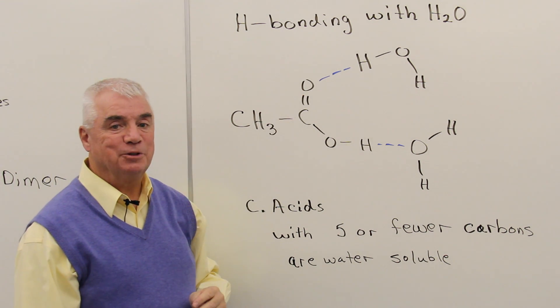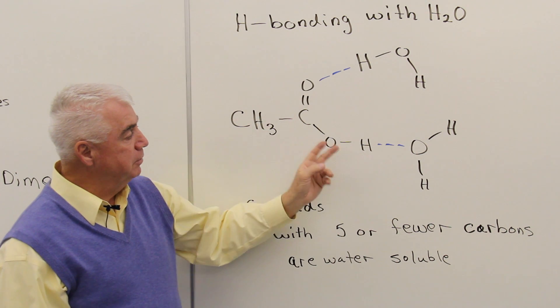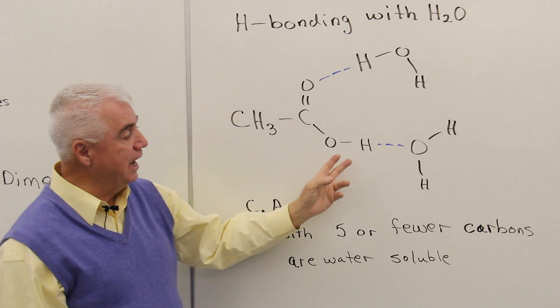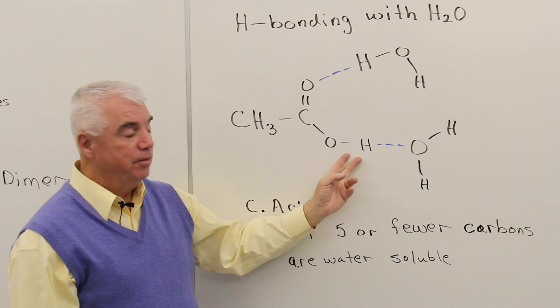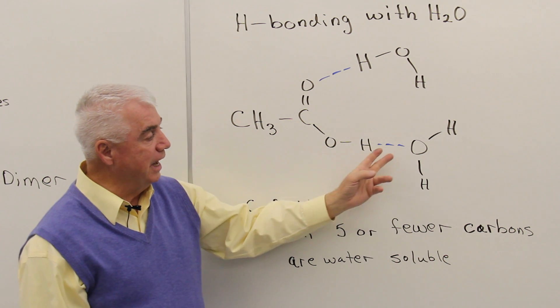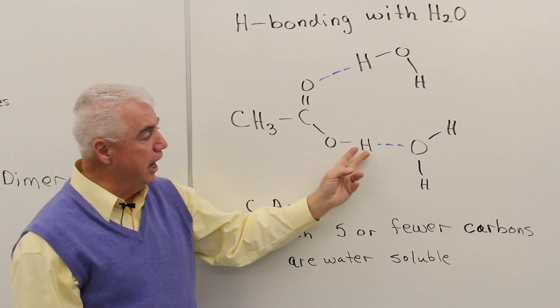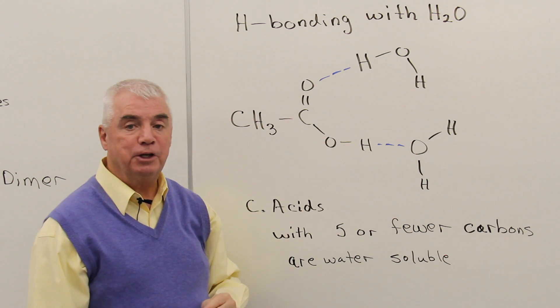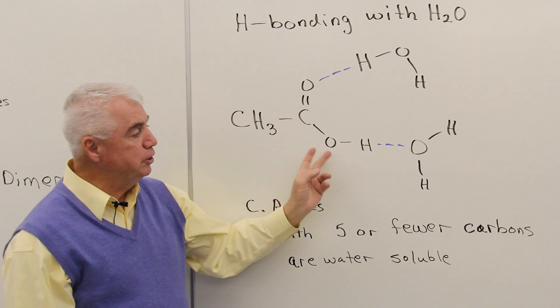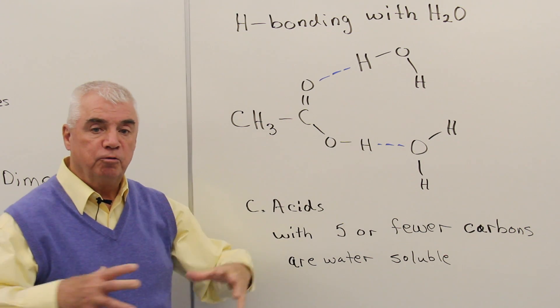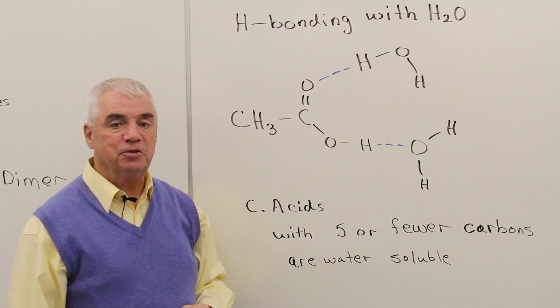So the blue line represents the hydrogen bond between water and the carboxylic acid. Down here, the hydrogen of the carboxylic acid is attracted to the neighboring oxygen of water. So again, a hydrogen positioned between two oxygens, bridging those two molecules, drawing the carboxylic acids into solution.